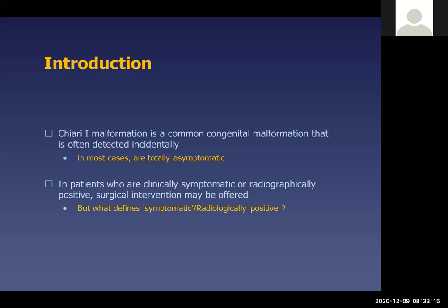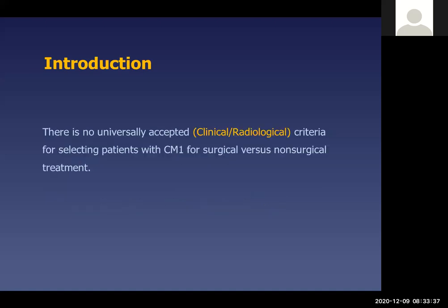Chiari 1 malformation is a common congenital malformation and we often detect it incidentally when doing an MRI. In most cases, they are totally asymptomatic. But in patients who are clinically symptomatic or radiographically positive, surgical intervention may be offered. The key question is: what defines symptomatic or radiologically positive? Till now, there is no universally accepted clinical or radiologic criteria for selecting patients for surgical versus non-surgical treatment.